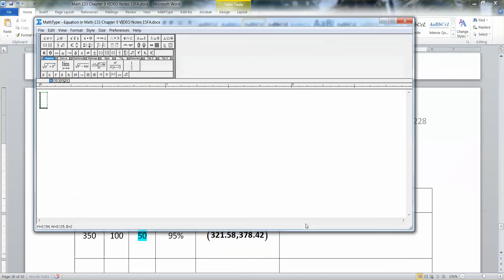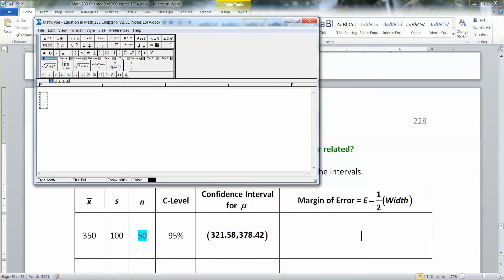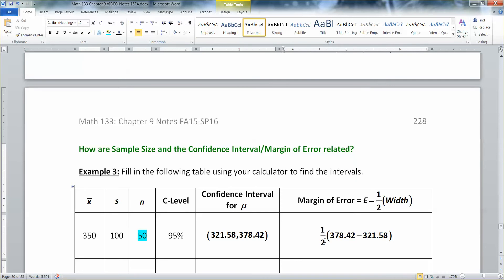All right, so I'm going to take the upper bound is 378.42. So I'm going to take 378.42. I'm going to subtract away 321.58. I'm going to cut it in half. Or if you like, you can think of it as a half times that value, right? So you take the difference and then subtract. Subtract to find the difference and then take a half of that. Either way you want to write it is fine.